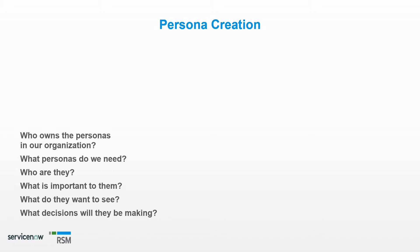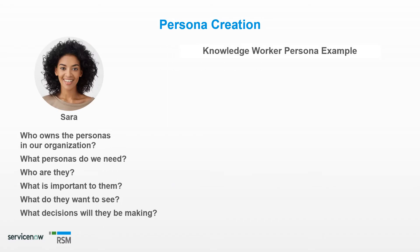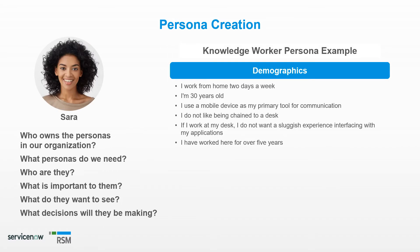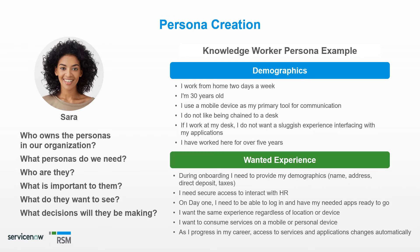In the previous example, we saw Abel, the Enterprise Architect. Here is another example of Sarah, the Knowledge Worker. This example is a little simpler. We can get an idea of who Sarah is by her demographics and we can also see the user experience she expects.